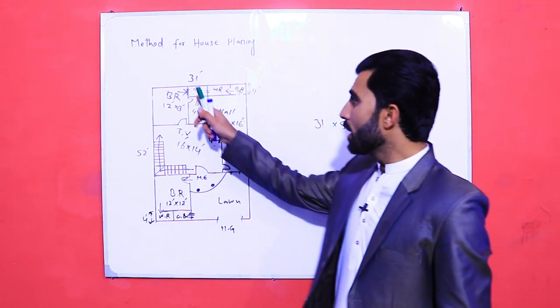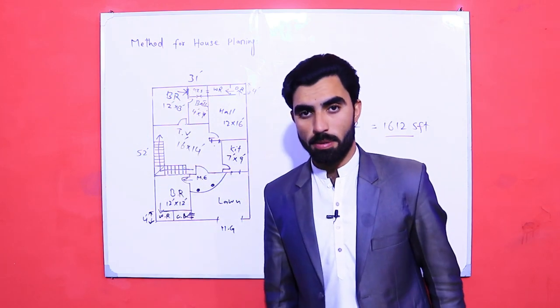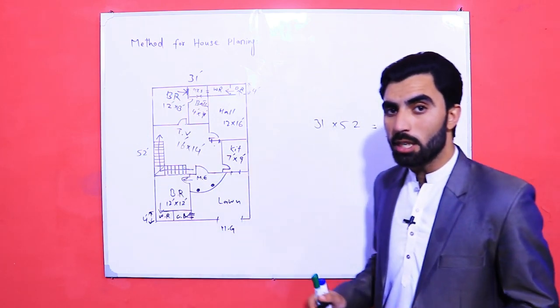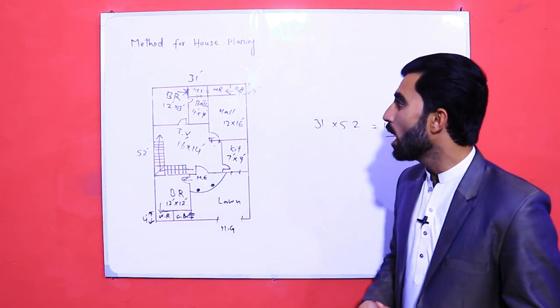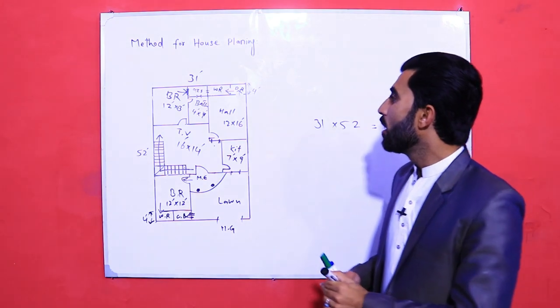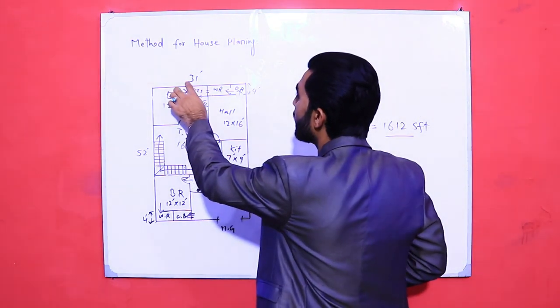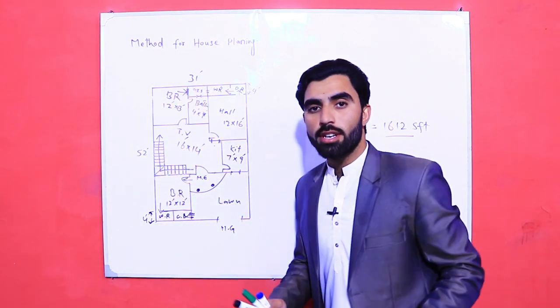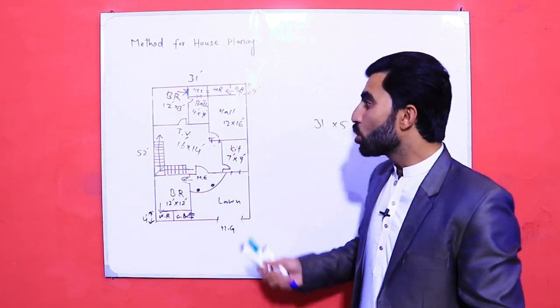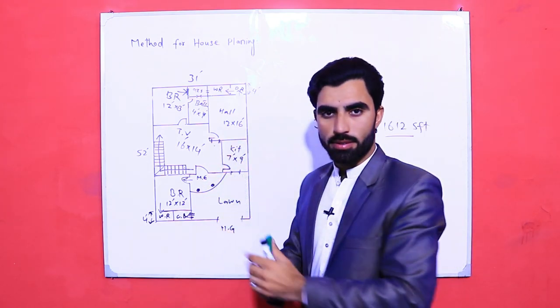This is a staircase for the first floor. This is the plan — 31 by 52 feet. Now I will tell you some important points: if the plot is from 28 to 35 feet, you should design like this.